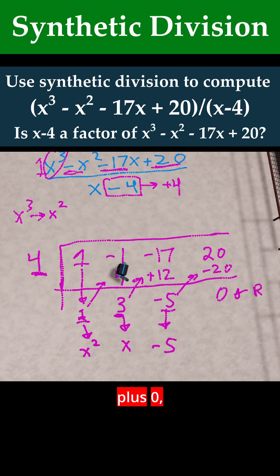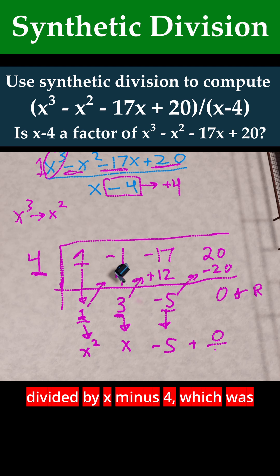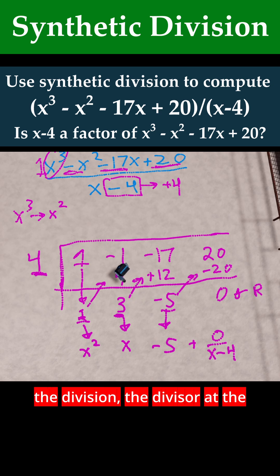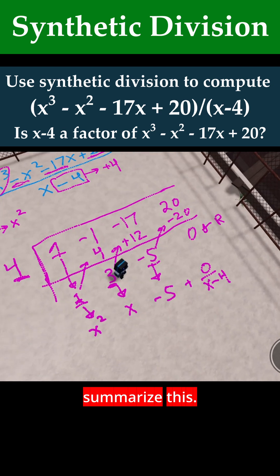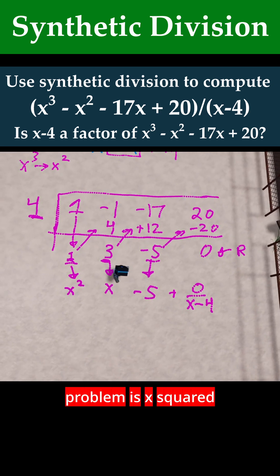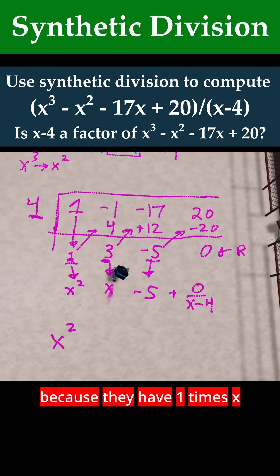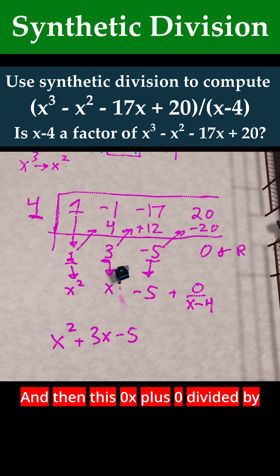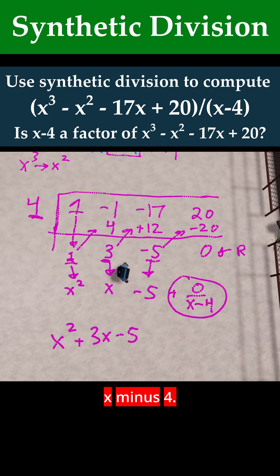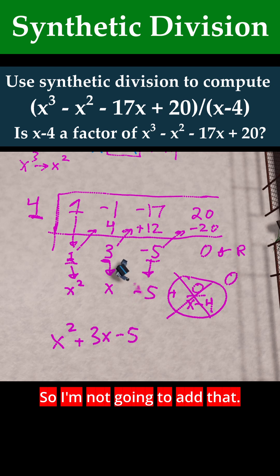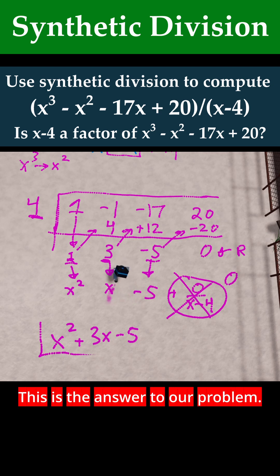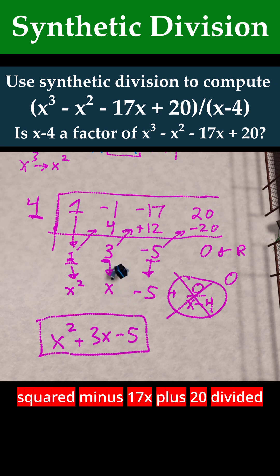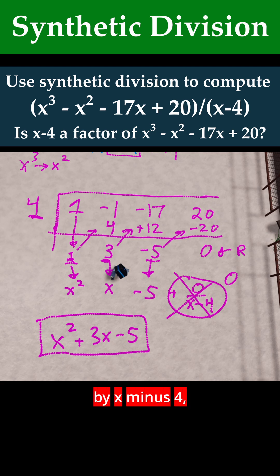The remainder of 0 is like saying plus 0 divided by x minus 4, which was the divisor at the start — and that's just 0, so we don't add it. Therefore our answer to this problem is x squared plus 3x minus 5. So if you divide x cubed minus x squared minus 17x plus 20 by x minus 4, you get x squared plus 3x minus 5.